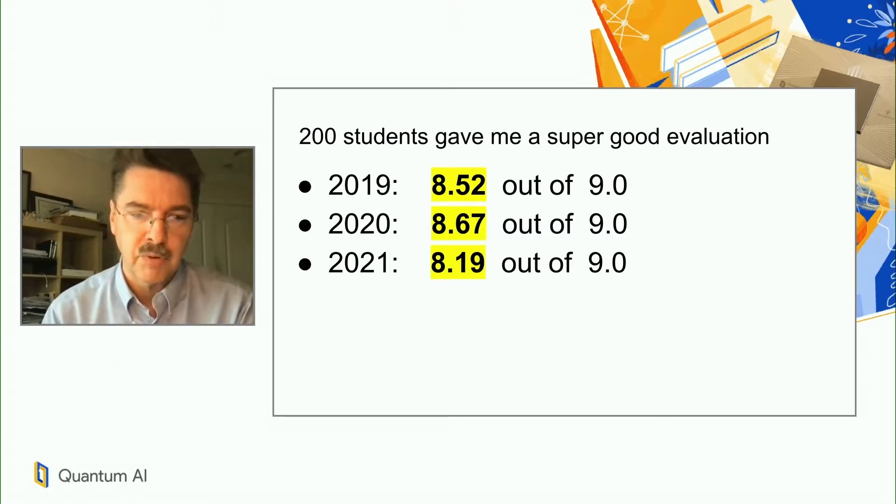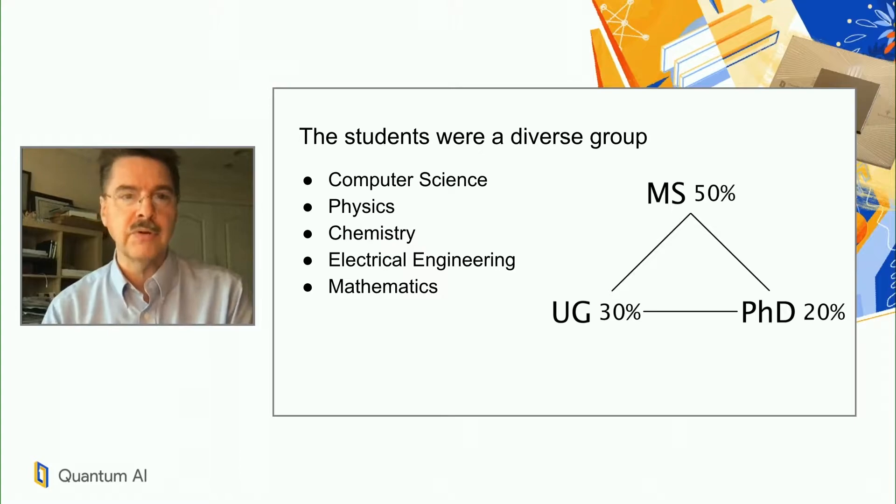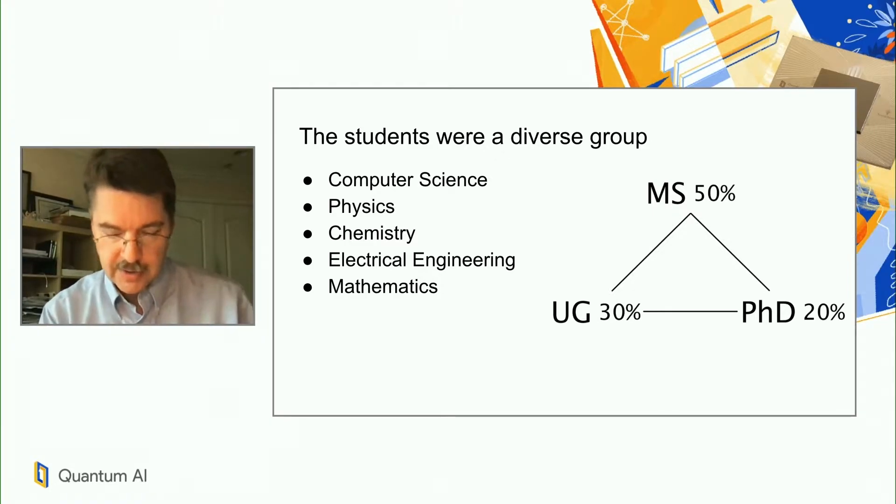One of the biggest problems of teaching a class at scale is the diverse group of students. The next slide talks about my students. They're from computer science, that's most of them, but also from physics, chemistry, electrical engineering, mathematics, and other departments. It's a big mix of master's students, undergraduate students, and PhD students.